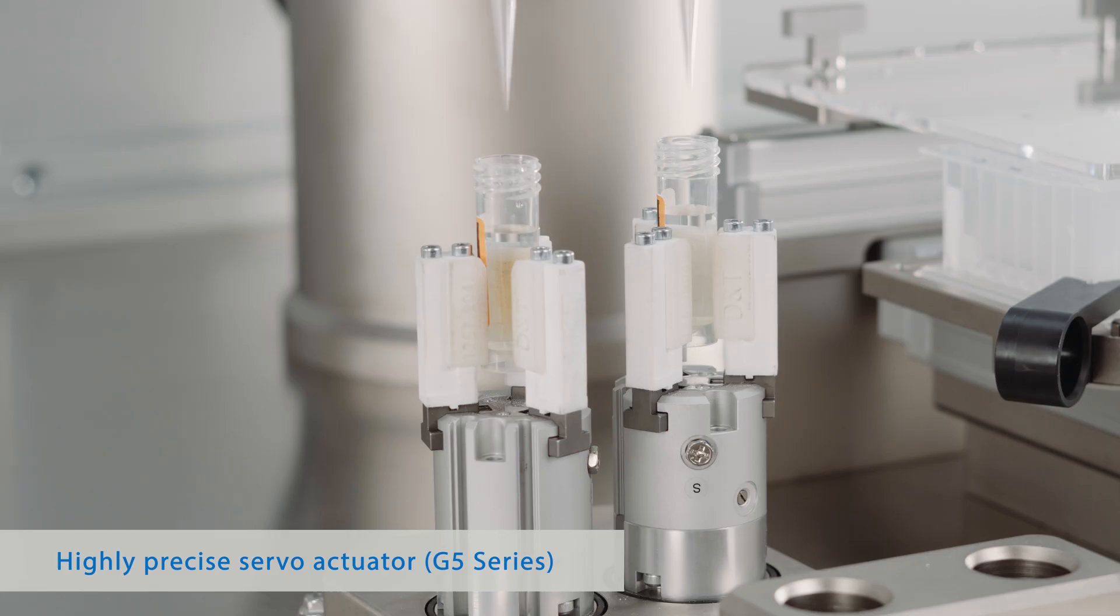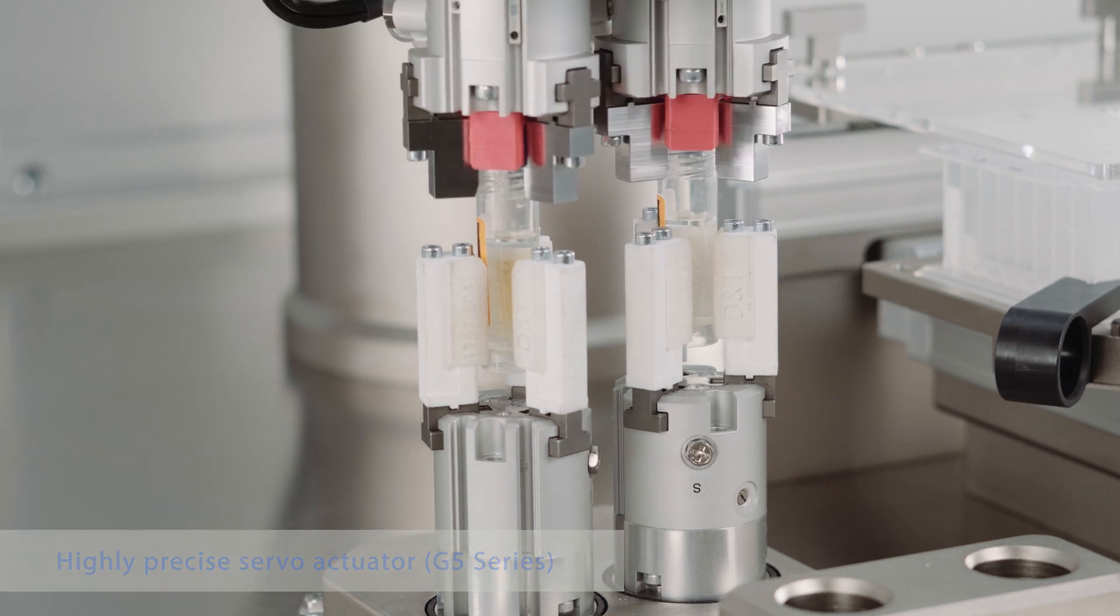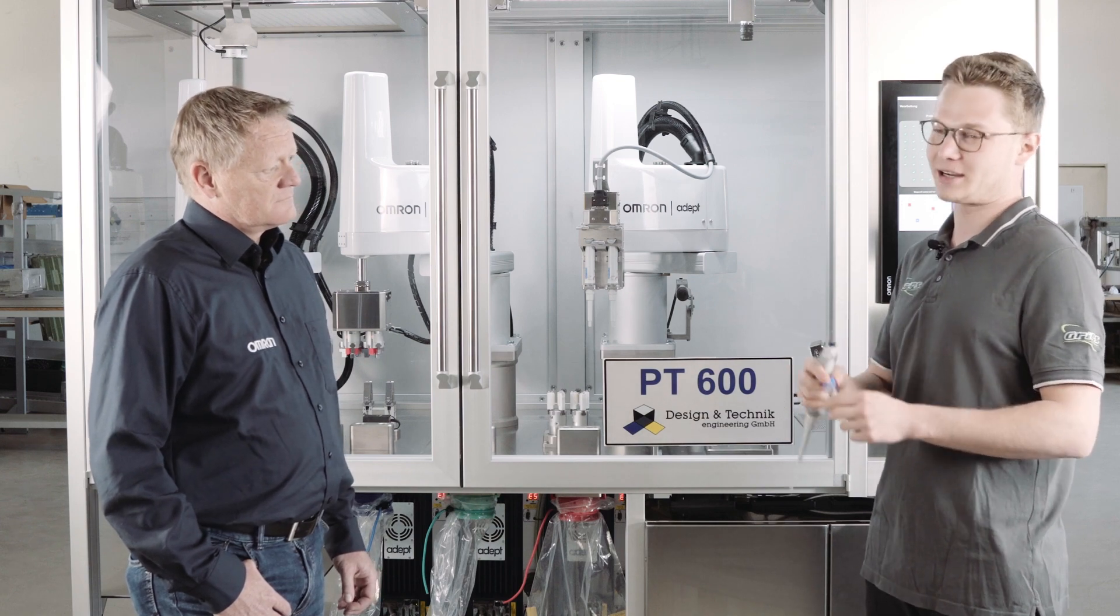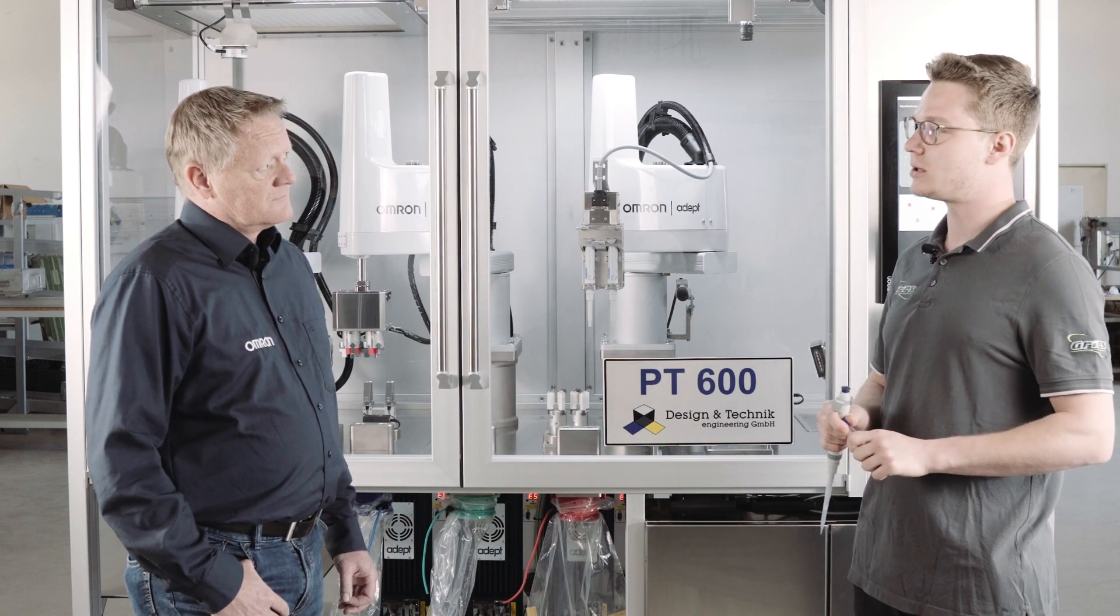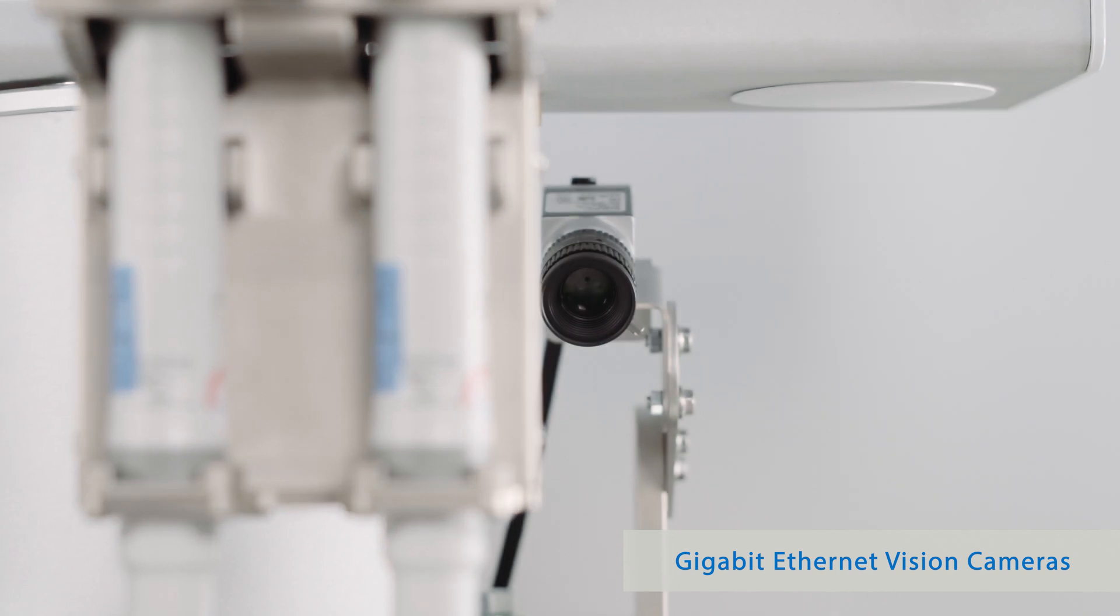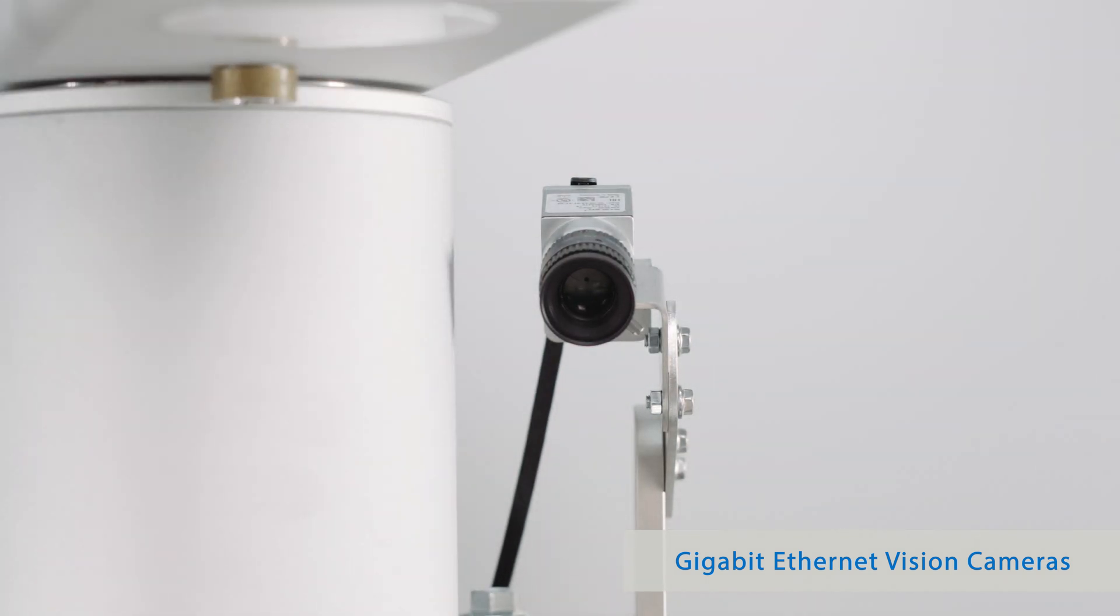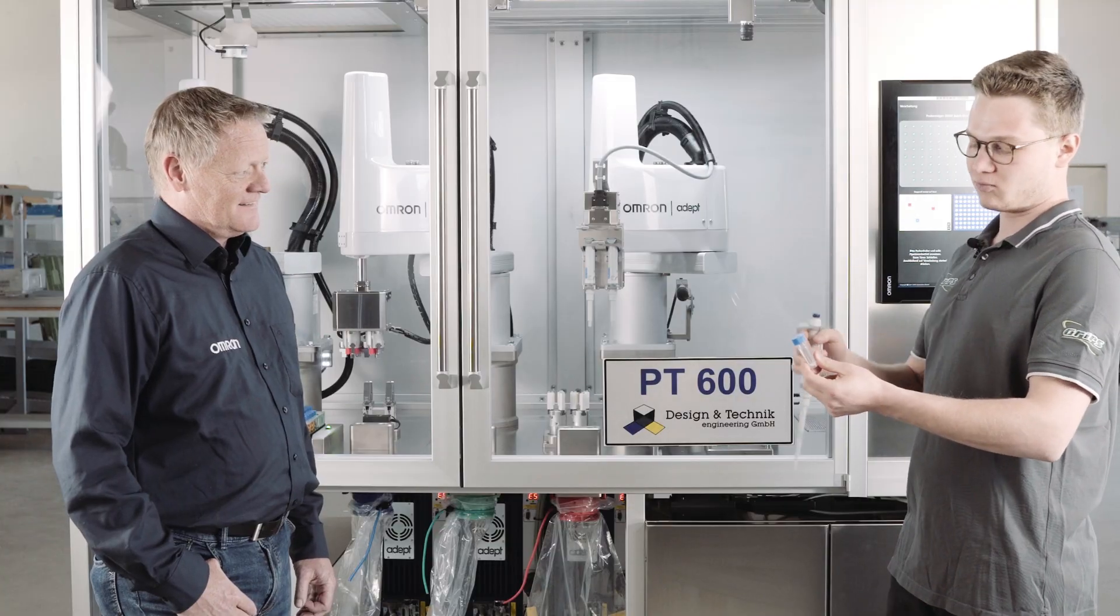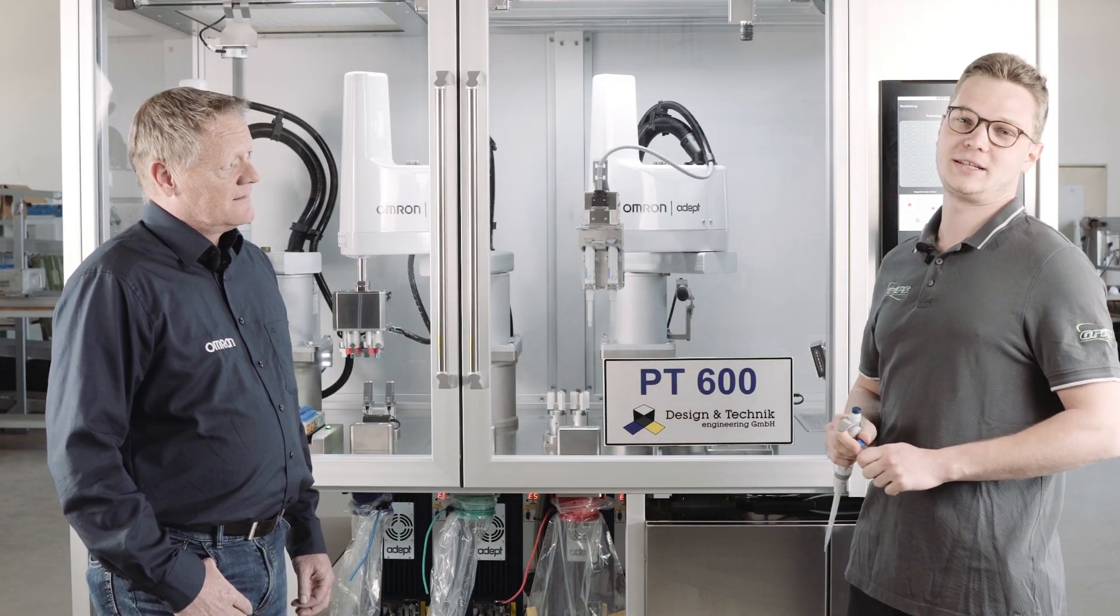Is the station also faster than a human being? Well, yes. If a normal pipetter works on it in the laboratory, it takes about 45 minutes up to an hour for this whole panel and the 96 samples. This is done by our robot within 10 minutes. So you are saving up a lot of time.